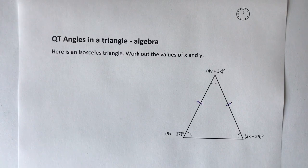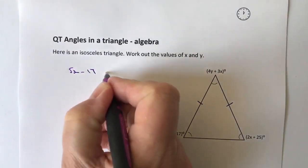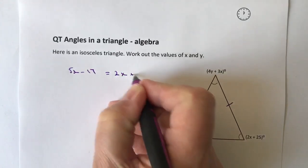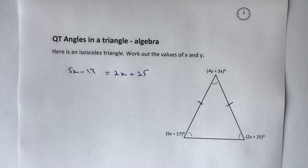Because it's an isosceles, we can write this as 5x minus 17 equals 2x plus 25. Then it's a case of solving for the value of x.